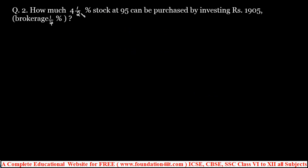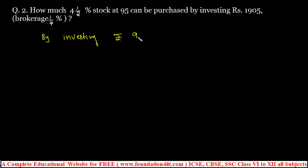See this question: how much 4.5% stock at 95 can be purchased by investing rupees 1905, with brokerage at 1/4 percent? Always remember when purchasing, brokerage should be added. Stock is calculated for every 100. 4.5% stock at 95 means: by investing 95 plus brokerage of 1/4, we purchase rupees 100 stock. The brokerage of 1/4 percent is also out of 100.